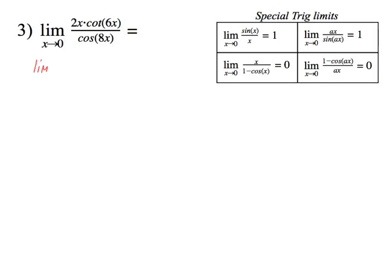The limit as x approaches 0 of 2x times cotangent. Cotangent, you hopefully remember, is cosine 6x over sine 6x. Now instead of dividing, I'm going to multiply by the reciprocal. So the reciprocal of cosine is 1 over cosine. So that's what we have so far.